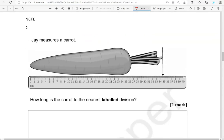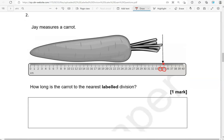Jay measures a carrot. How long is the carrot to the nearest labeled division? So we've got the arrow here. That is in between 34 and 35, but it's closer to 35. So we're going to write 35 centimeters.